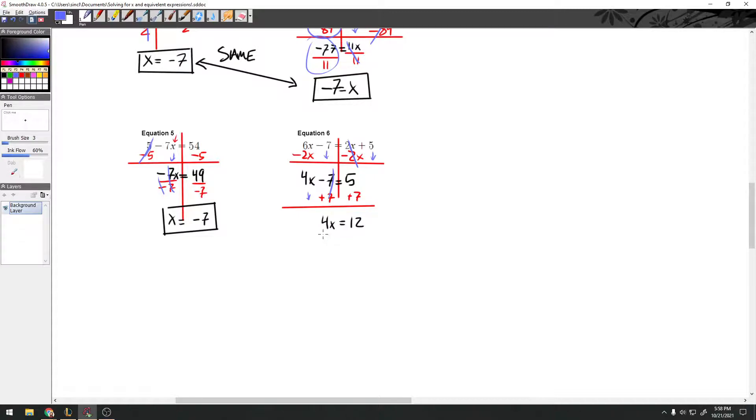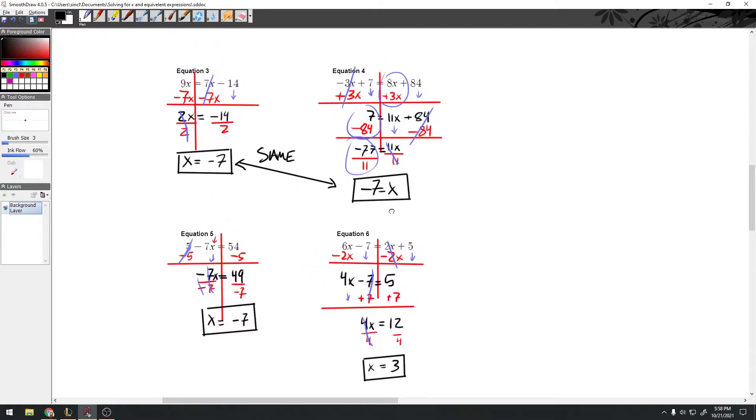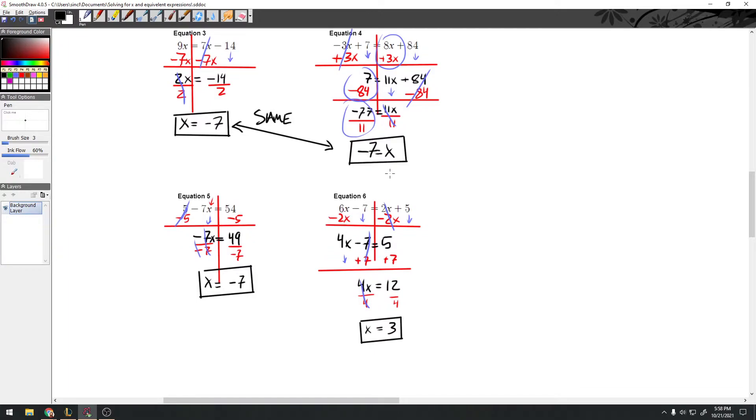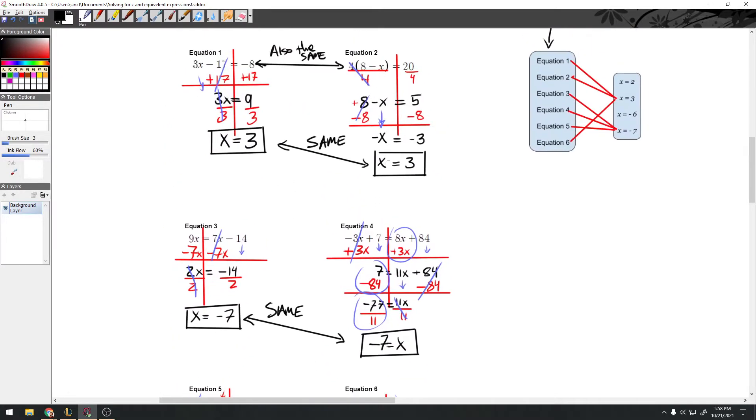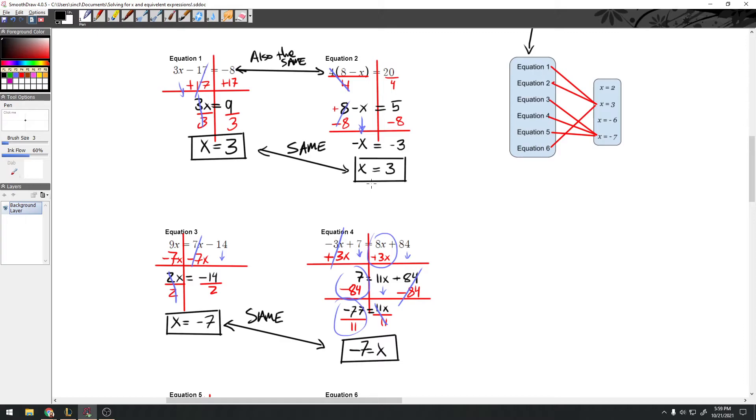Last move is to divide by 4. Divide by 4. I have this cross out. And my x equals 3. And that is what we knew. So the way that you can find if equations are the same is to solve them. And if they have the same solution, then they are equivalent equations.